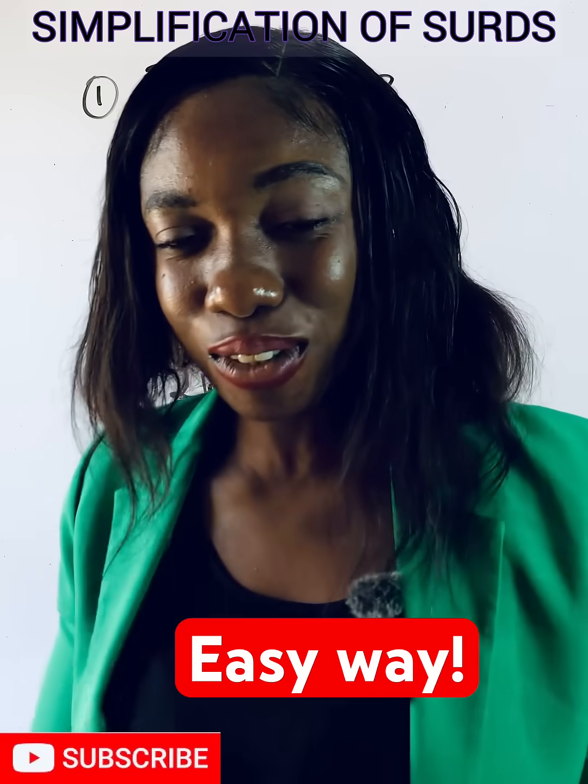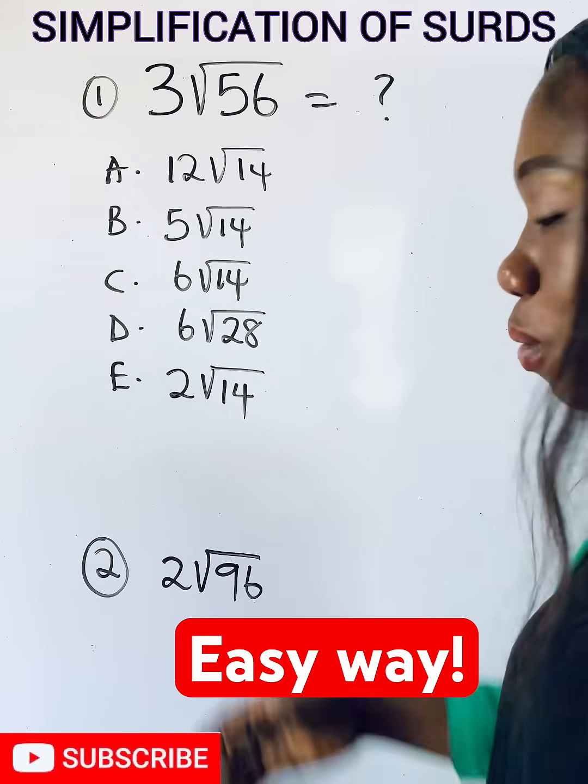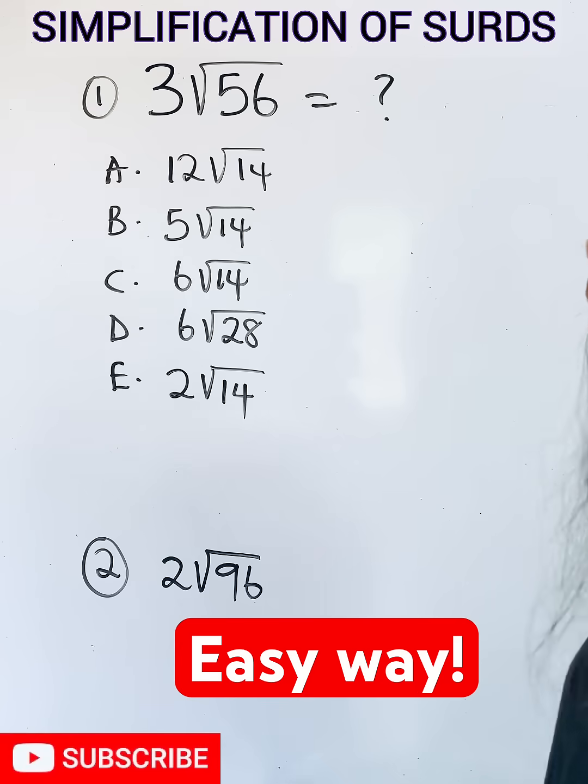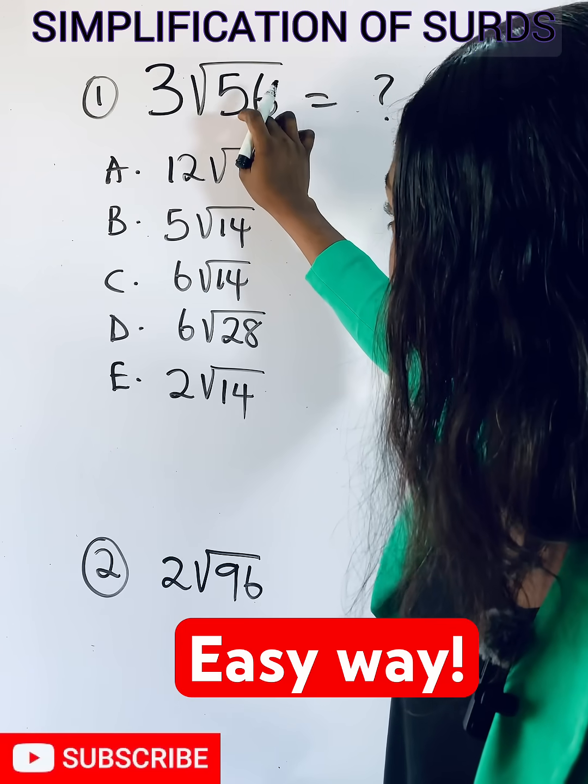Learn how to simplify radicals when there is no calculator. This is what you have - which of the options is correct? What you simply need to do is reduce this radical. The radical is the value inside the roots.